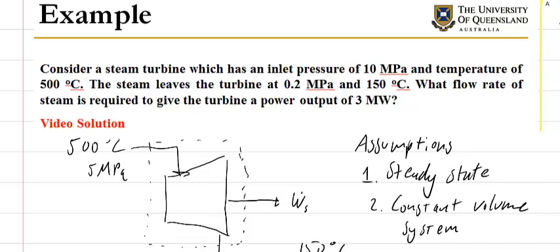In this example, we're going to look at a steam turbine and the amount of work that you can extract from a kilogram of steam that passes through the turbine. The inlet conditions are 10 megapascals and 500 degrees Celsius, and the steam leaves at 0.2 megapascals and 150 degrees Celsius. What flow rate of steam is required to generate 3 megawatts of power?